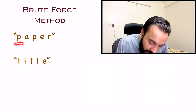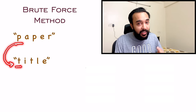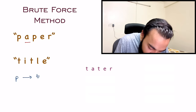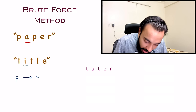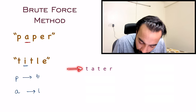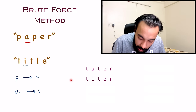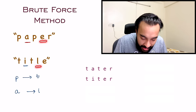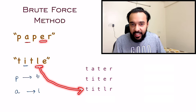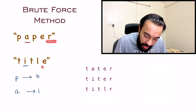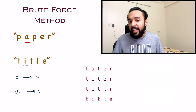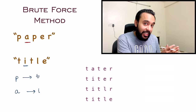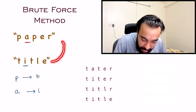You take the first character P and see what you have to replace it with — you replace it with T, getting T A T E R. Moving on, the next character is A, which you replace with I, giving you T I T E R. The character P is already taken care of. You move to E and replace it with L, giving T I T L R. Finally, the last character R is replaced with E, giving you the final string T I T L E. You were able to go from one string to the other.